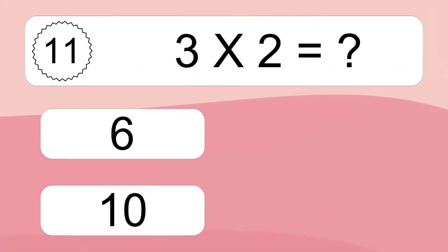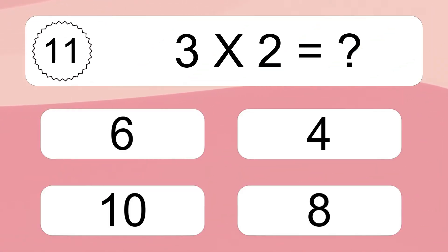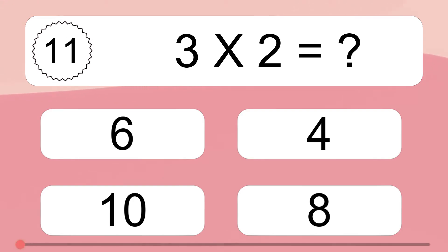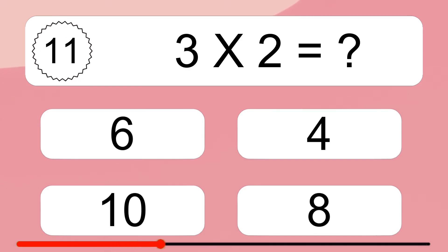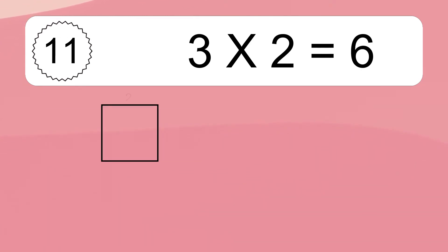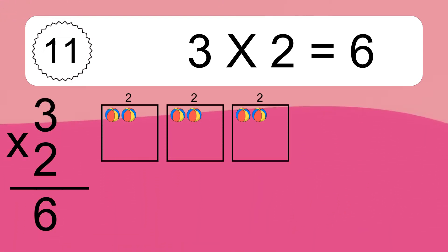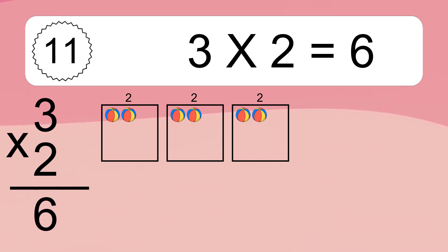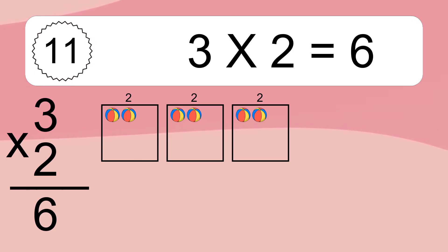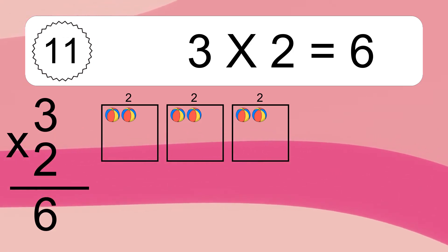10 times 9 equals what? We have 3 boxes, and each box has 2 colorful balls inside. If you count all the balls in all the boxes together, you will have 3 times 2 balls. This equals 6 balls.